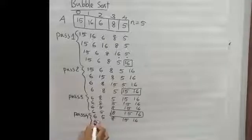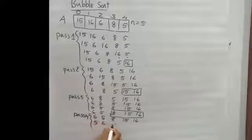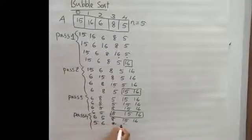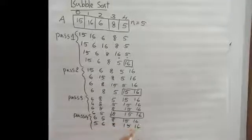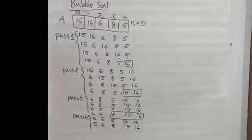The final sorted array is: 5, 6, 8, 15, 16.